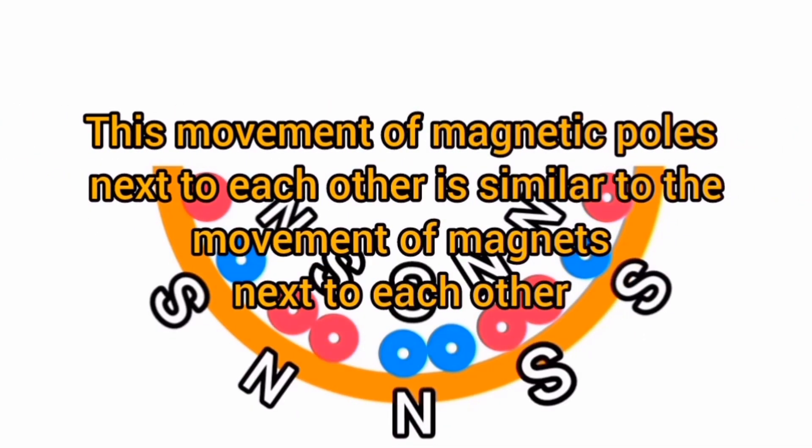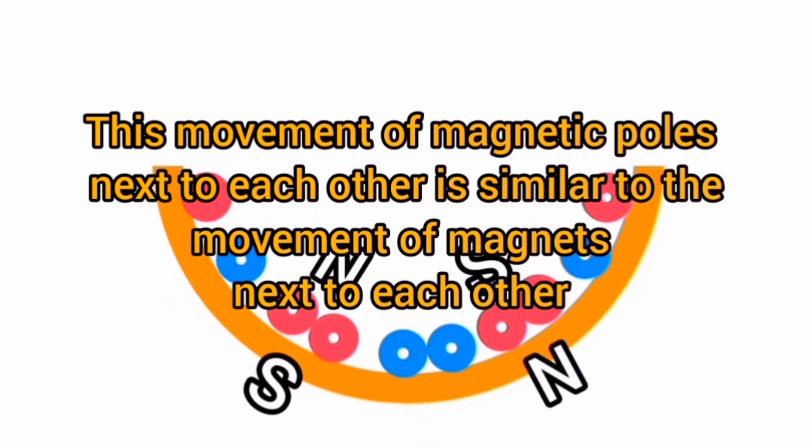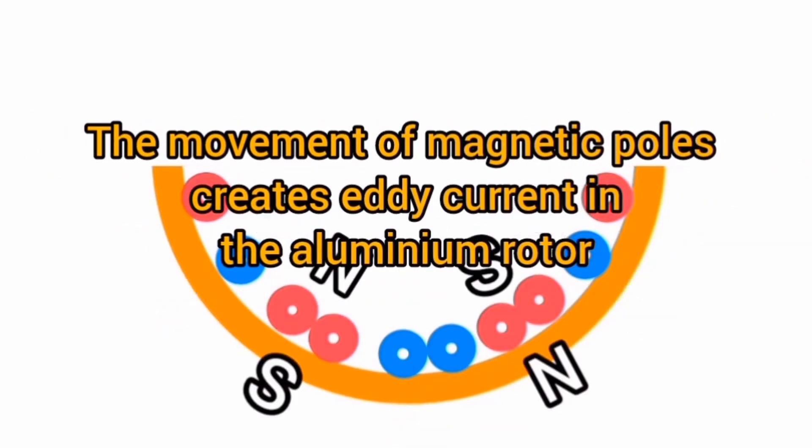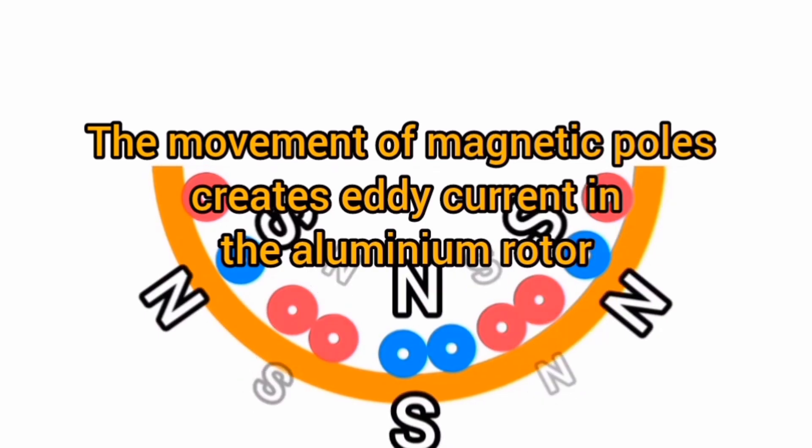This movement of magnetic poles next to each other is similar to the movement of magnets next to each other. The movement of magnetic poles creates eddy current in the aluminum rotor.